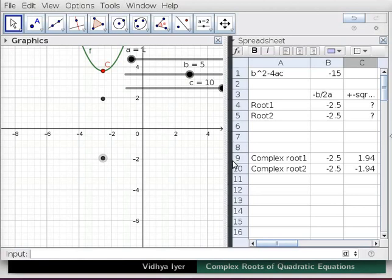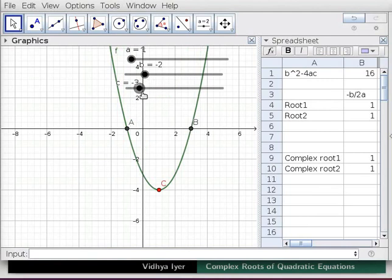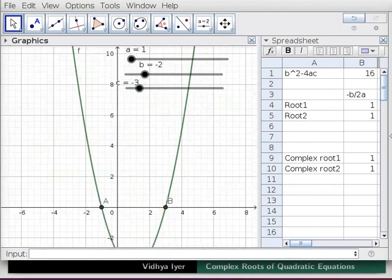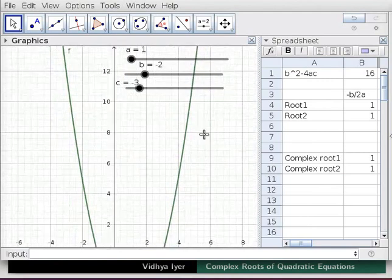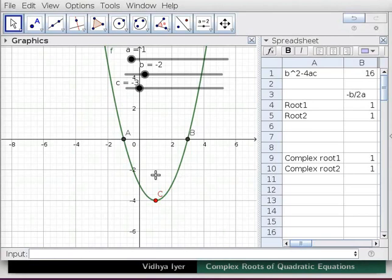Drag boundary to see sliders in Graphics View properly. Drag the slider B to -2 and slider C to -3. Click in and drag Graphics View to see the parabola.